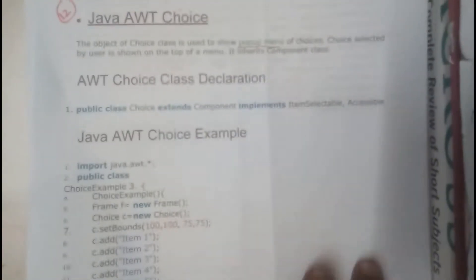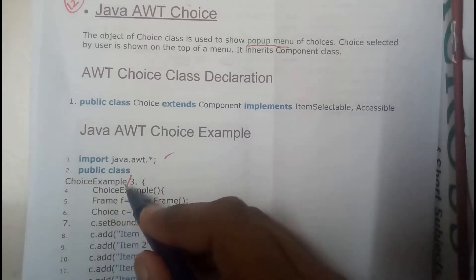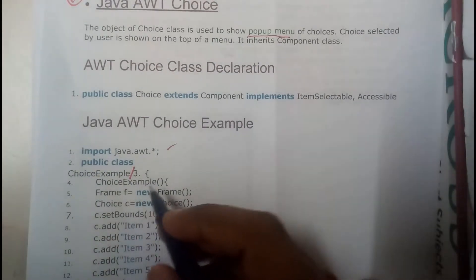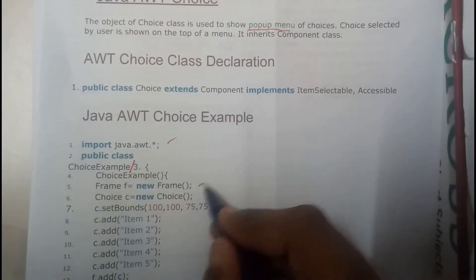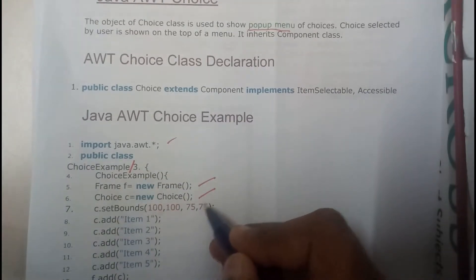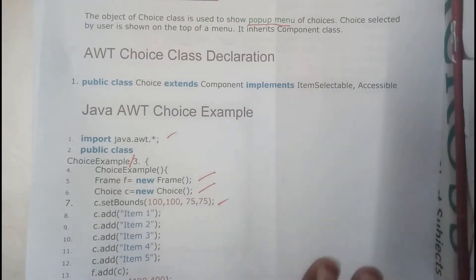Now let us go through an example. Initially, we'll be importing the AWT files, then we start a public class ChoiceExample, then we start our constructor and inside that we initialize our frame and our choice.